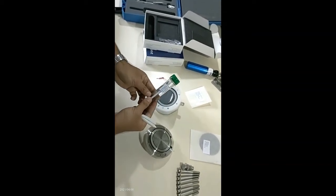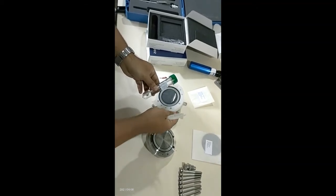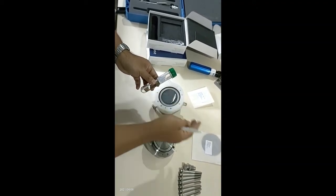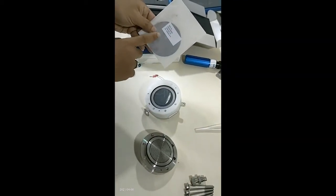...demin water in this bottle. After wetting, we can install the cathode. Okay, next step: we input the cathode after the membrane.